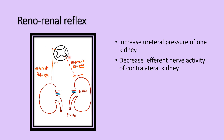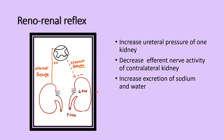That decreases the efferent nerve activity of the contralateral kidney. The efferent nerve pathway originates from the anterior nerve activity from the higher center, which increases the excretion of urinary sodium and water, and decreases the renin-angiotensin system.